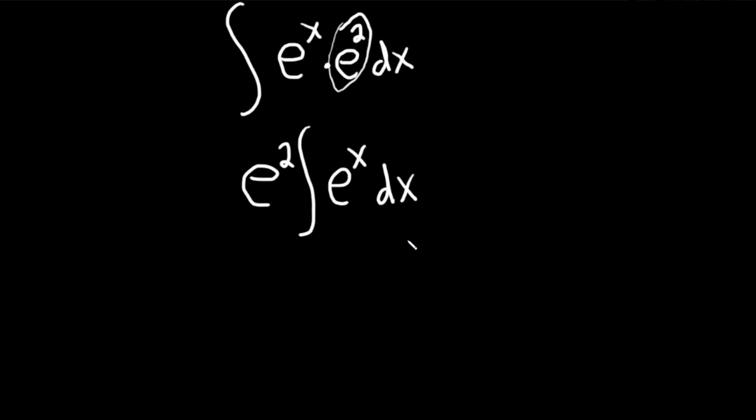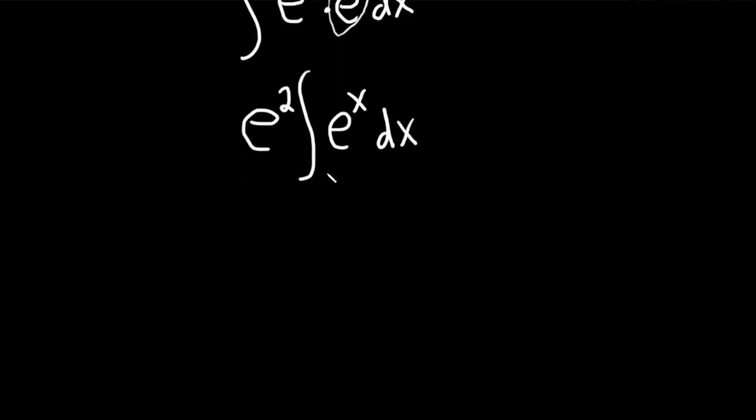And so now we can integrate e to the x. We know the integral of e to the x is simply e to the x. So this will become e squared e to the x, and then we add our constant of integration, always plus capital C.